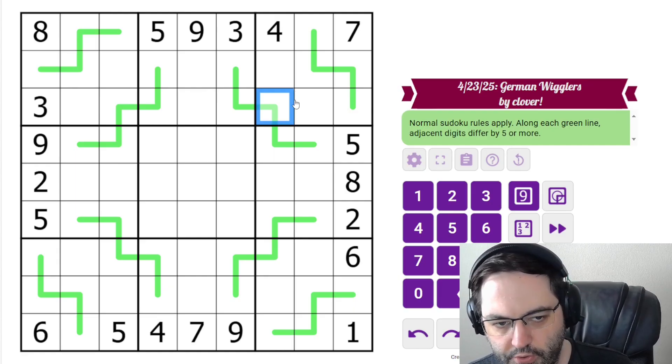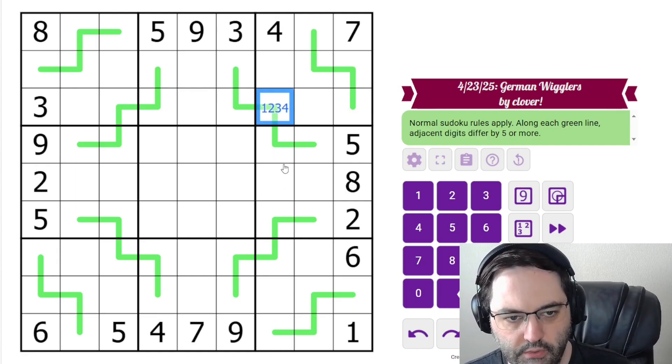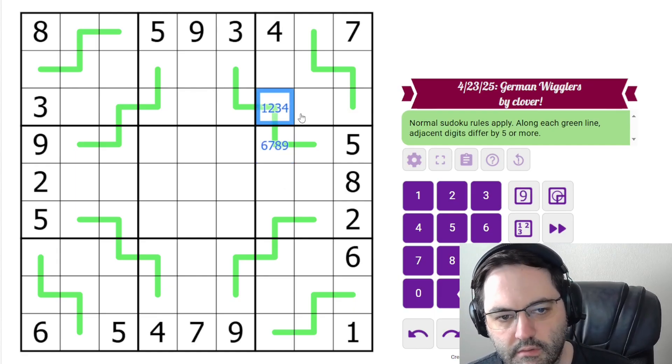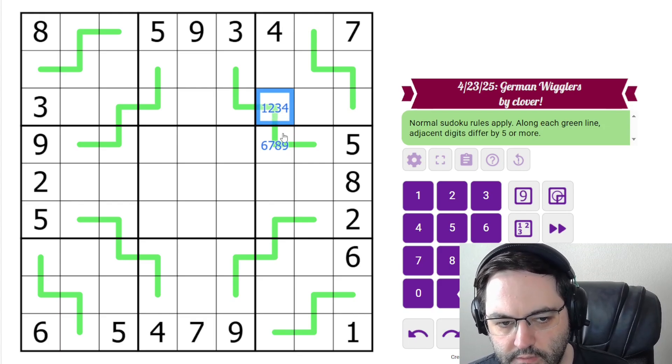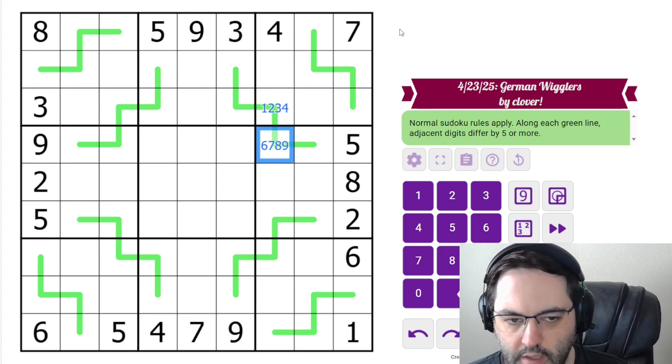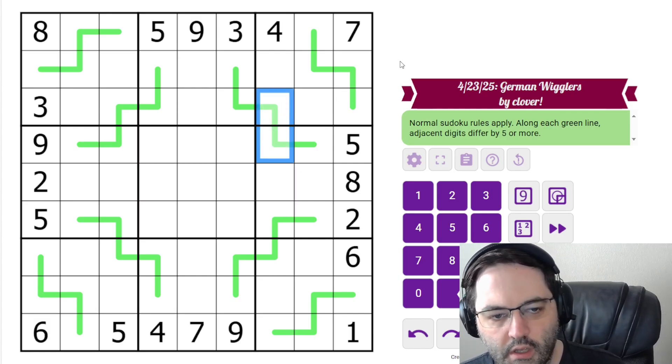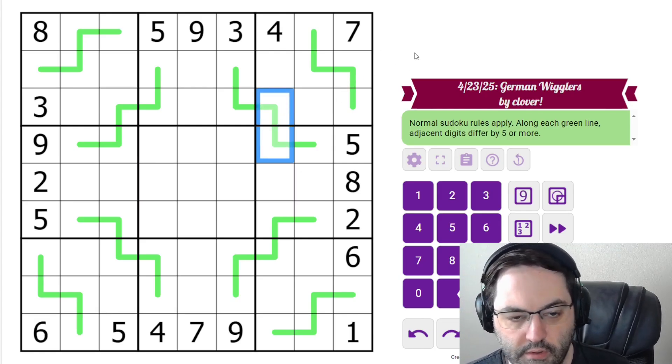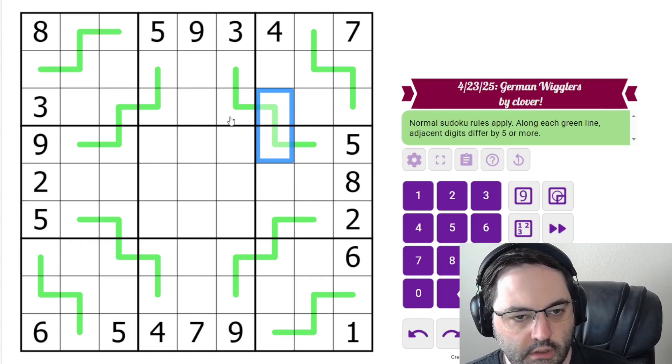We also have to alternate between low digits and high digits, because if we want to get 5 away from one of these low digits, we have to cross over 5 and get into high digits. 4 and 6 in particular are very restricted, because they can only go next to one other digit.